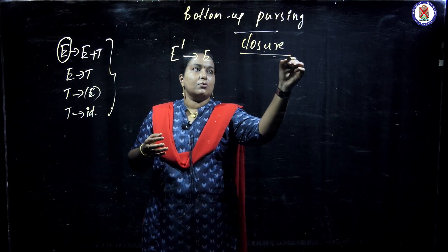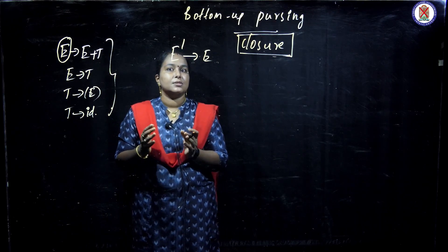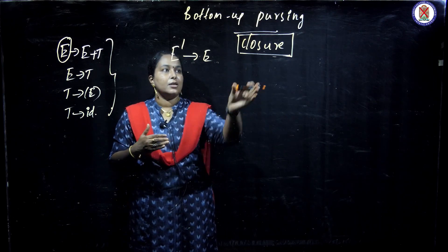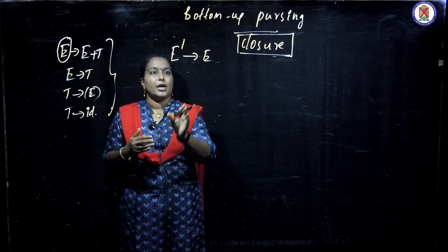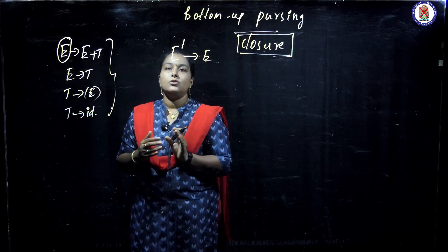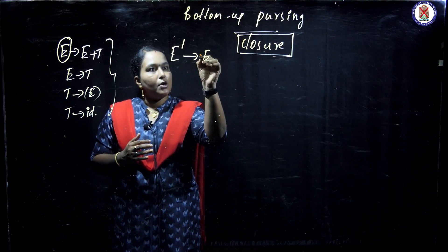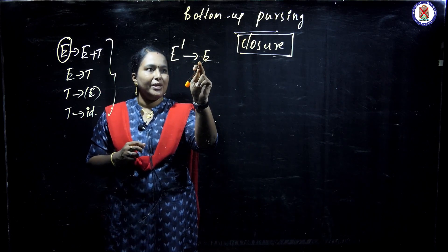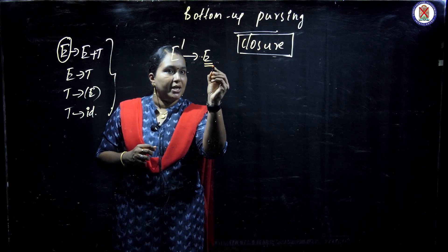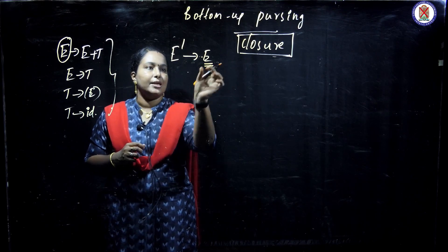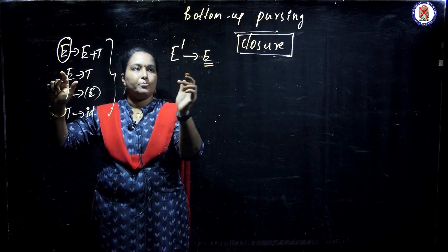When we produce the closure operation, only then can we do bottom-up parsing. The first step to construct a bottom-up parser is to perform the closure operation. To do the closure operation, we first find the augmented grammar. Closure operation means: for E' gives E, we put a dot in front of E. When we put the dot in front of E, we look at the terminal next to the dot — which is E here. So we look into the productions of E, and there are two productions.